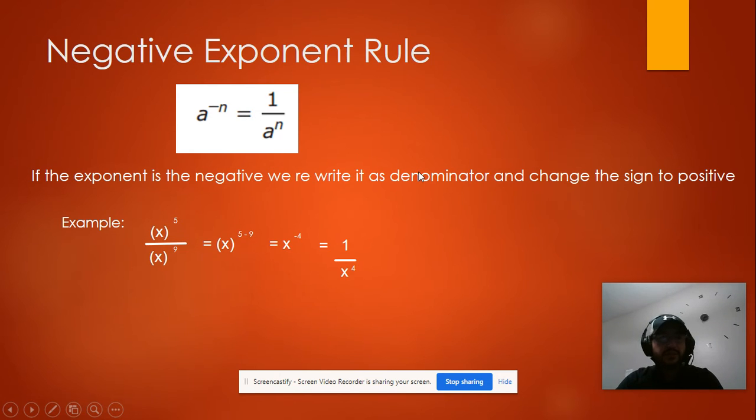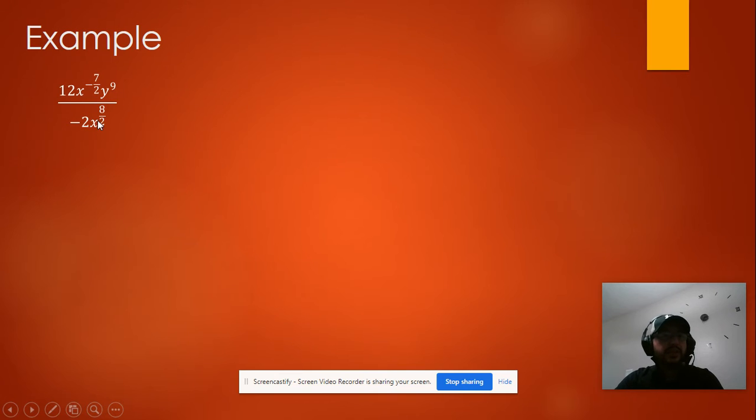Now let's see another example. We got this expression, we want to simplify it. So first step will be the coefficient 12 divided by negative 2 will be negative 6.